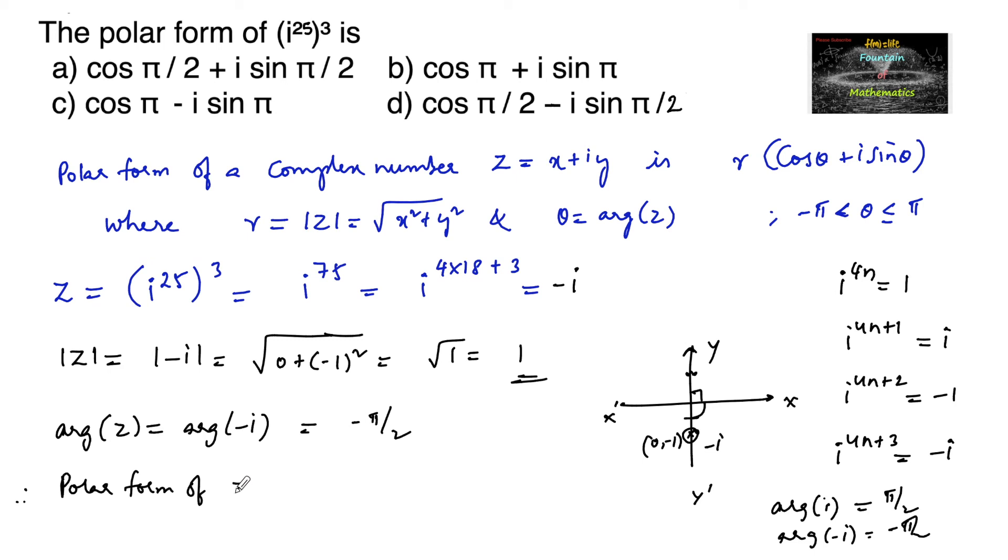Therefore polar form of complex number z is equal to minus i is r, where r is here 1, times cos theta, so theta is minus pi by 2, cos of minus pi by 2 plus i sin of minus pi by 2.